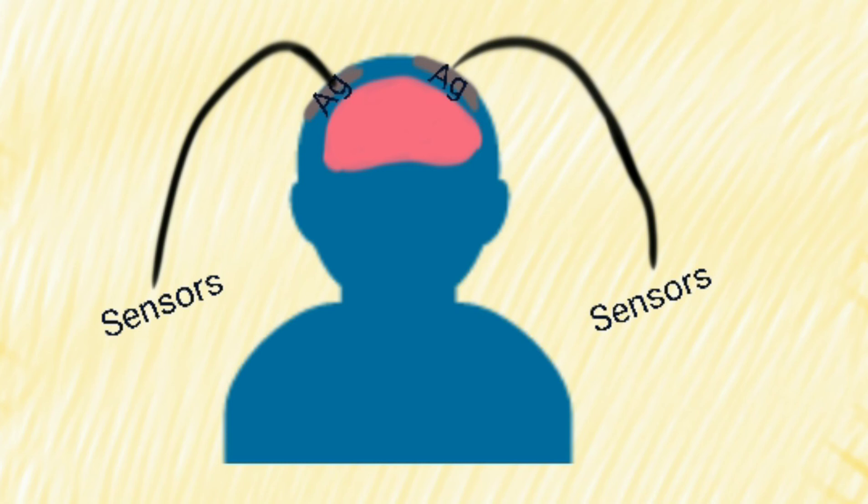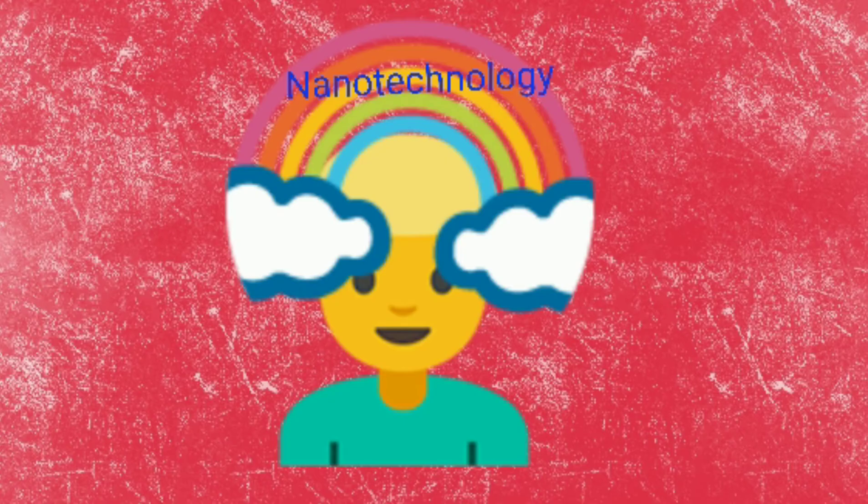For EEG measurements, it is necessary to insert silver wires into epileptic patients, which are connected to a set of sensors that detect the brain's electric activity. This is just one of the many issues nanotechnology can solve and change patients' lives.